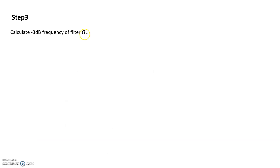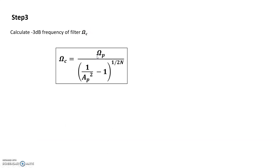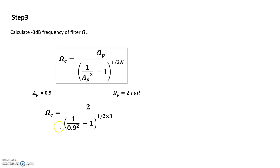The next step is to find the minus 3 dB cutoff frequency ΩC. Using the derived formula, ΩC = ΩP / (1/AP² − 1)^(1/2n), with AP = 0.9, ΩP = 2 radians, and n = 3, we calculate and get ΩC = 2.5477.